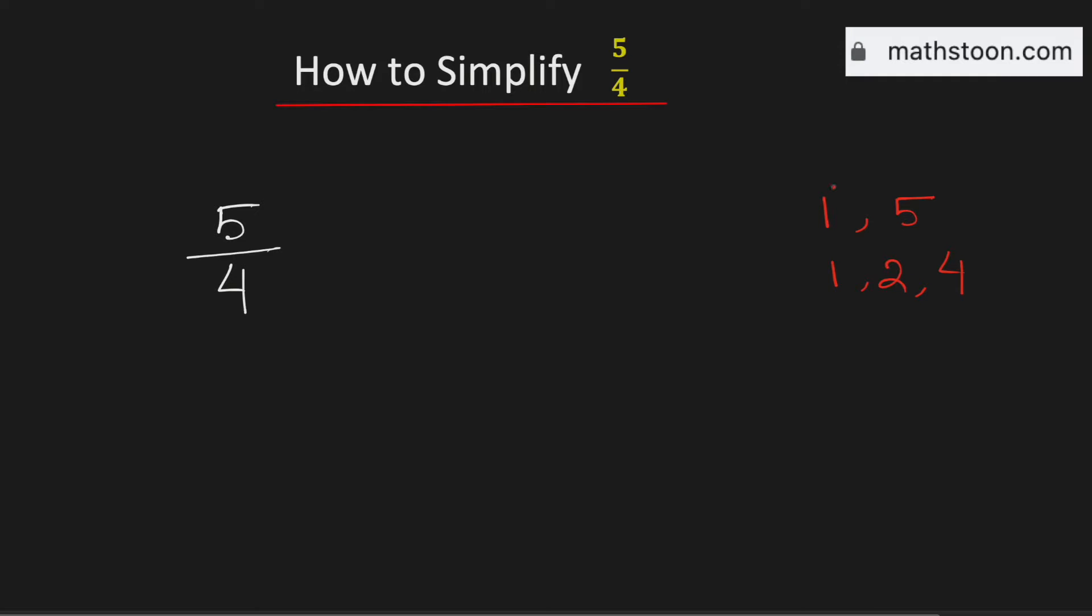So the common divisor is 1 only. Now to simplify it we will divide both the numerator and the denominator by the common divisor which is 1 and by doing so we will get 5 over 4.